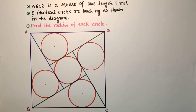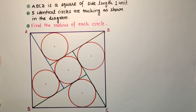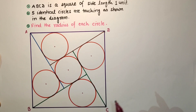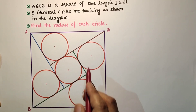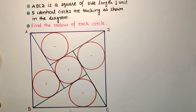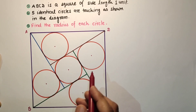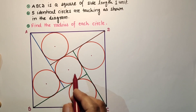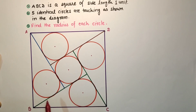Hello respected viewers and friends, welcome to my channel once again. In this question we are given a square ABCD of side length 1 unit, and 5 identical circles are drawn according to the diagram given. We have to find the radius of each circle. Since all circles are identically equal, the radius of all circles will be equal, so we have to find the radius of any one circle.